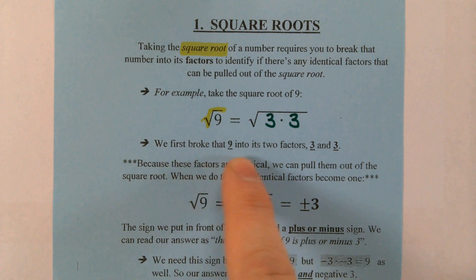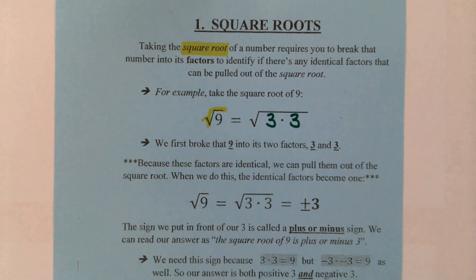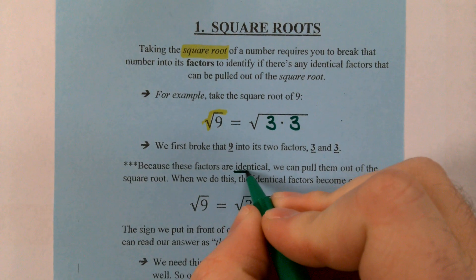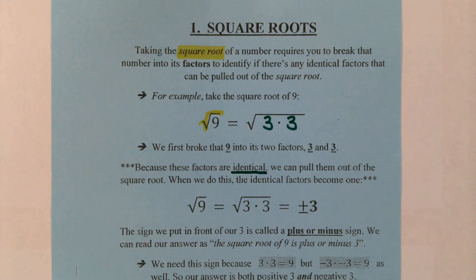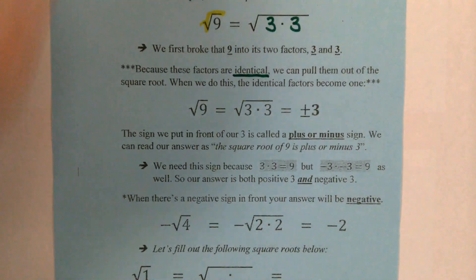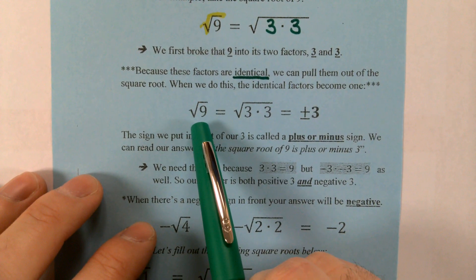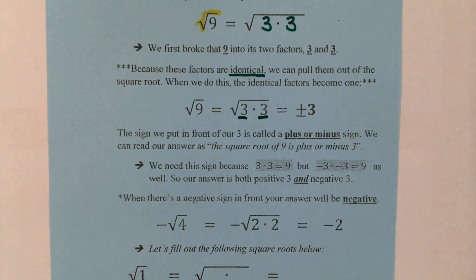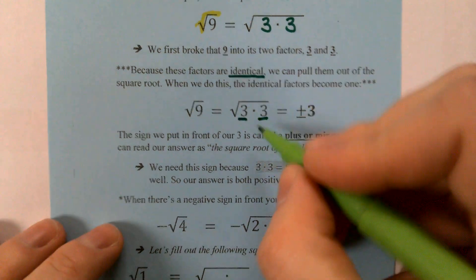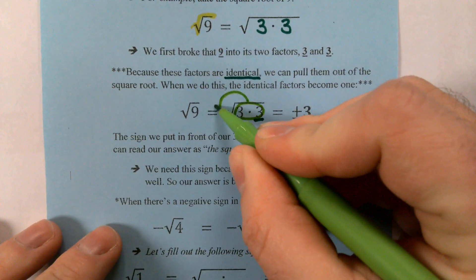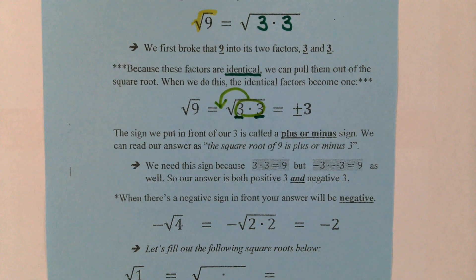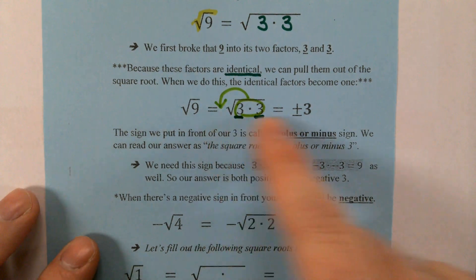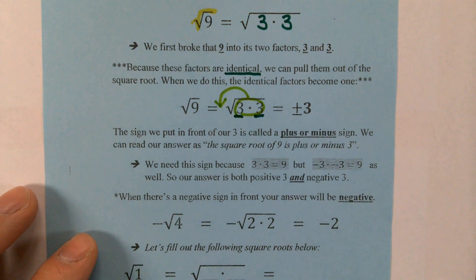We broke 9 into its two factors, 3 and 3. Because these factors are identical — that's what we're looking for, identical factors — we're going to pull them out of the square root. When we do this, these identical factors become 1. We start with the square root of 9, break it into factors of 3 times 3, loop those factors up, and bring them right out in front of that square root. Because that was everything underneath our square root, the sign disappears and we're left with our result.